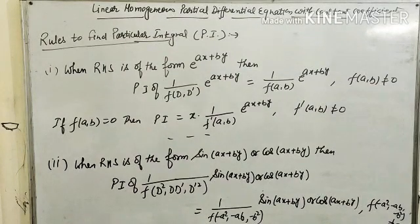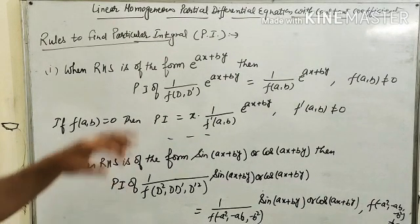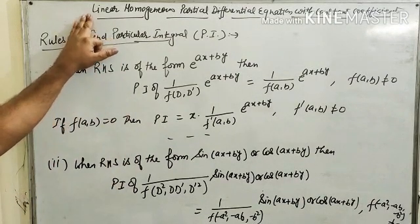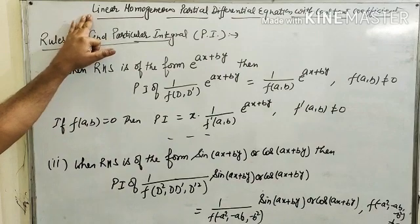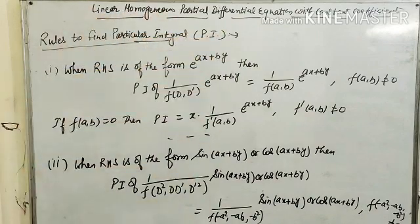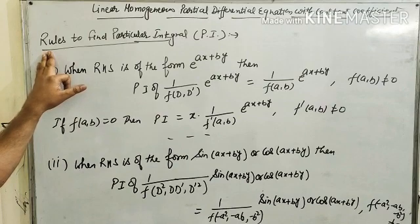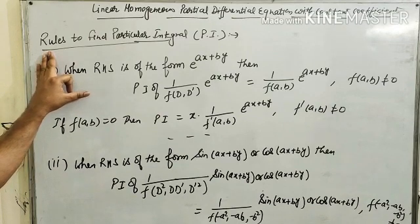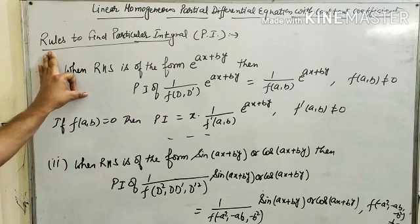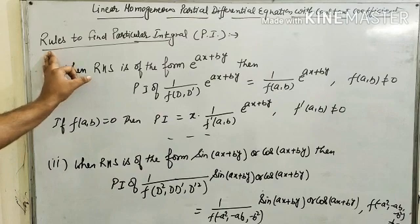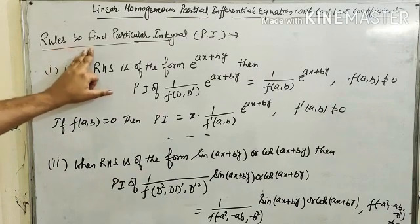Hello friends, this is the second lecture of linear homogeneous partial differential equation with constant coefficient. In the last lecture, we studied how to find the complementary function (CF). Now in this lecture, we will study rules to find the particular integral.